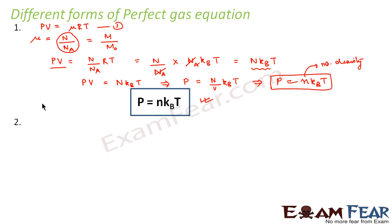So let us see the second form now. In the second form what we will do is we will put the value of μ is equal to M divided by M₀ in equation 1. So earlier I had put N by NA. Now I will put M by M₀. So what will I get? I will get PV is equal to M divided by M₀ into RT. So this we can write as P is equal to M divided by M₀ into RT. So what do you think is M by V? Mass per unit volume is nothing but density. So I can write P is equal to ρRT divided by M₀, where M₀ is the molar mass.